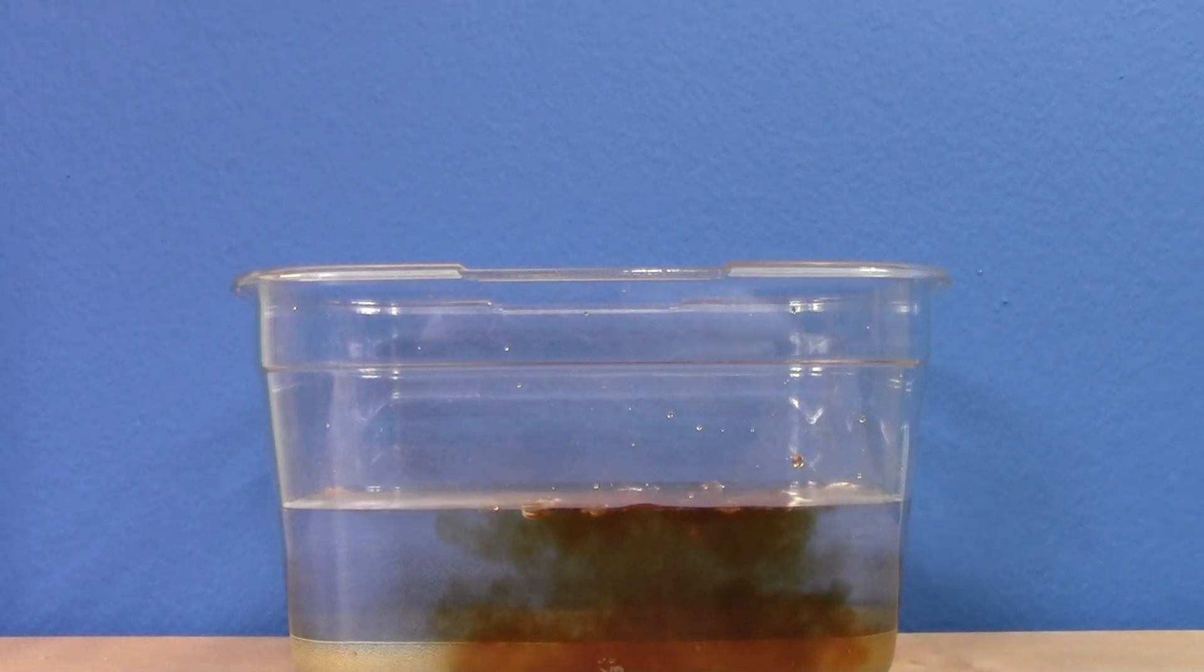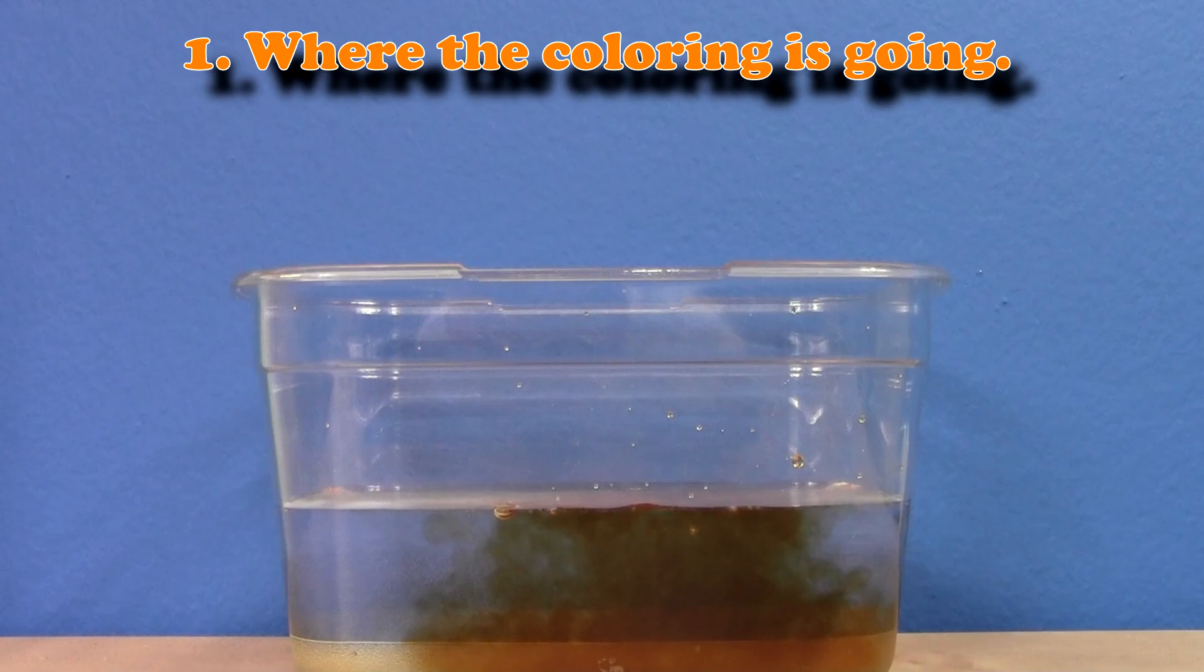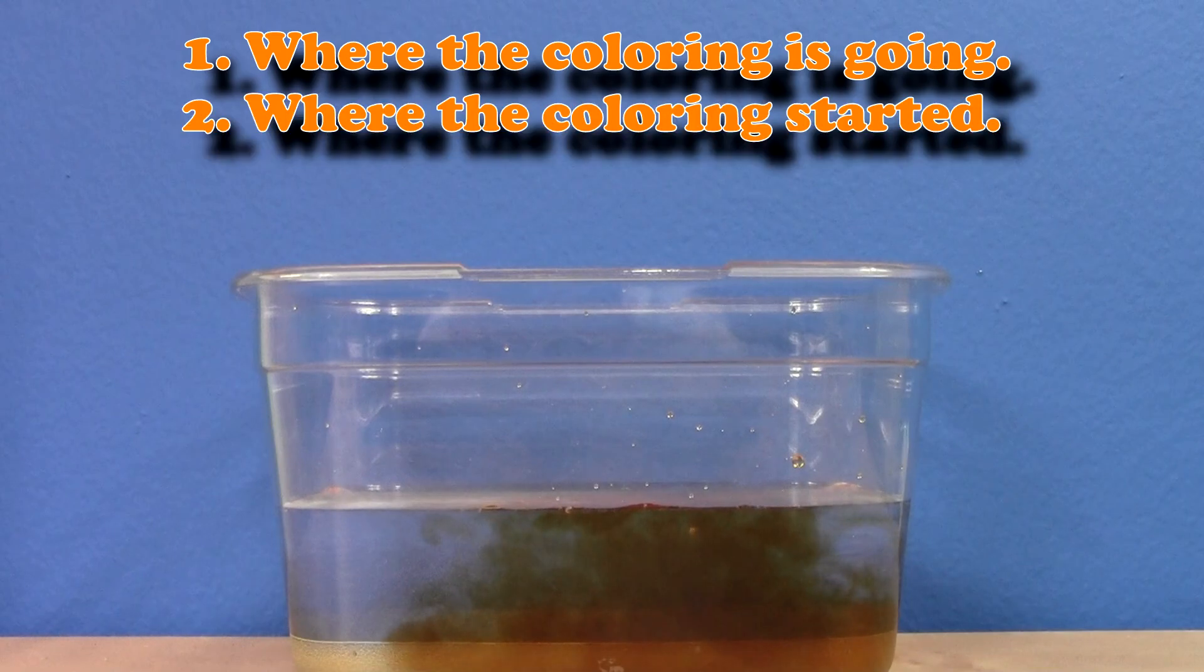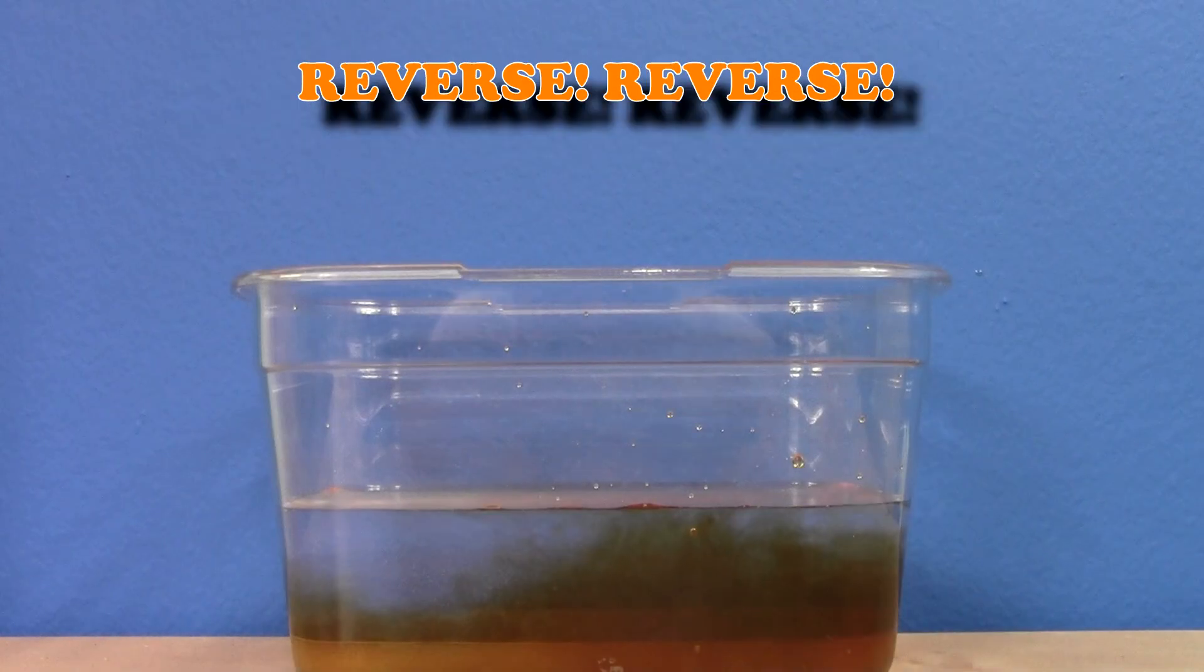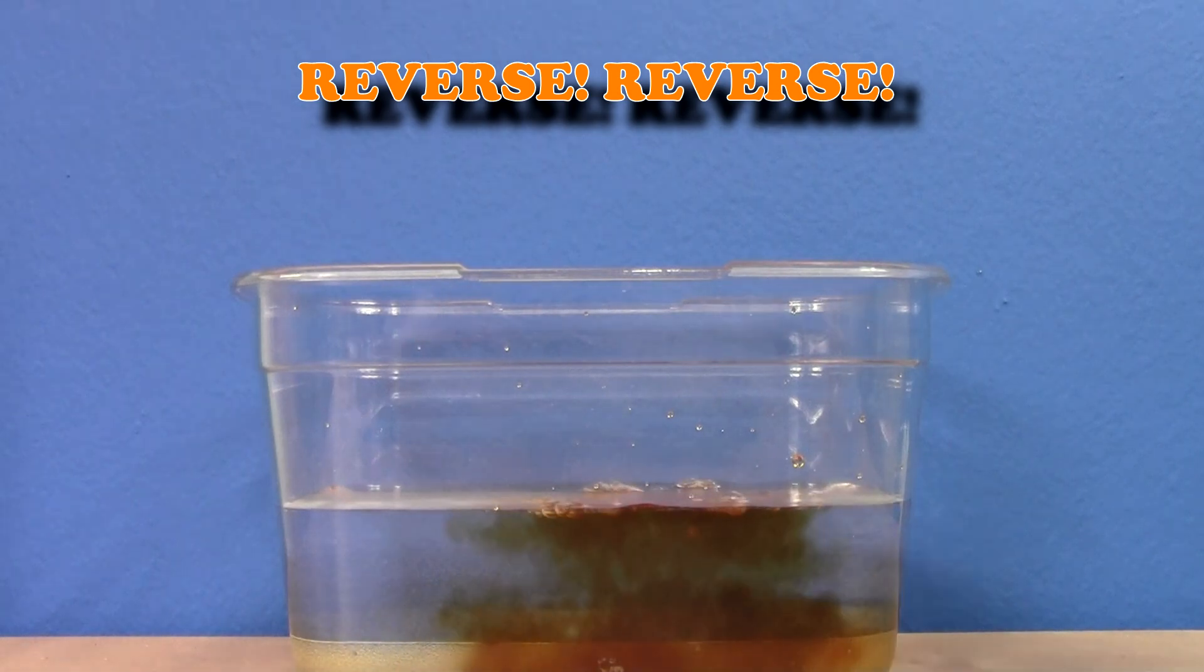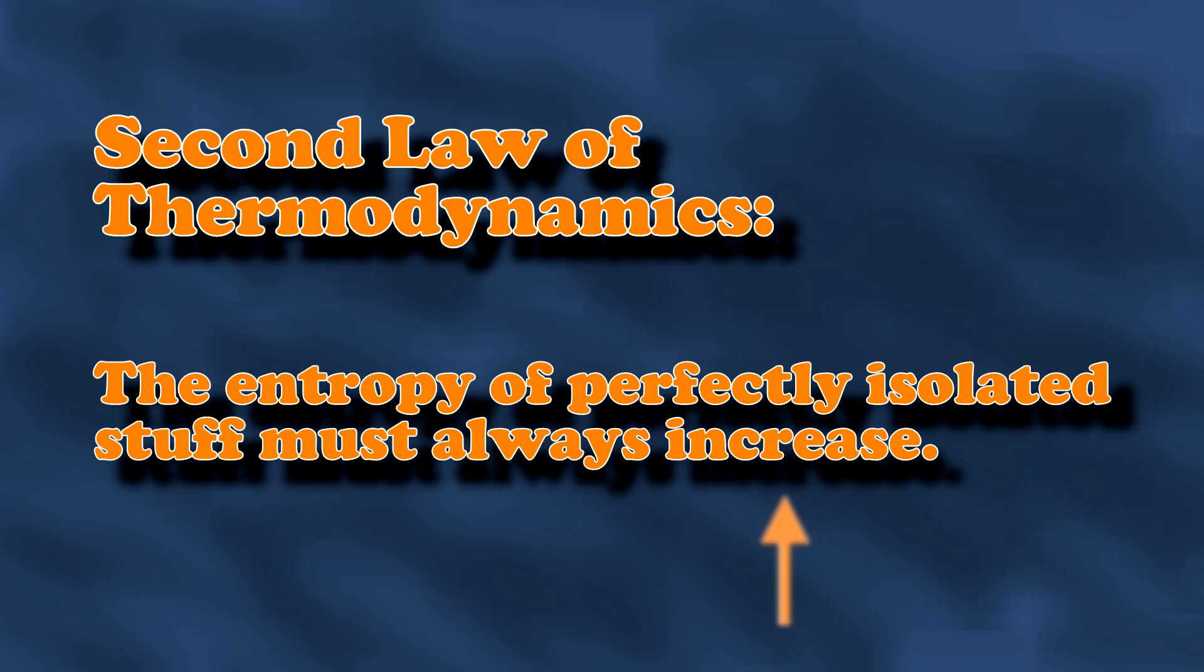Let's say you see something like this. It would be very natural for you to conclude two things. One, the coloring will spread until it's uniform throughout the water. And two, the coloring was added to the water right about here. If you run this process in reverse, you can tell instantly that it's going in reverse, simply based on your personal experience in similar situations. The entropy would be decreasing, which would violate the second law of thermodynamics.